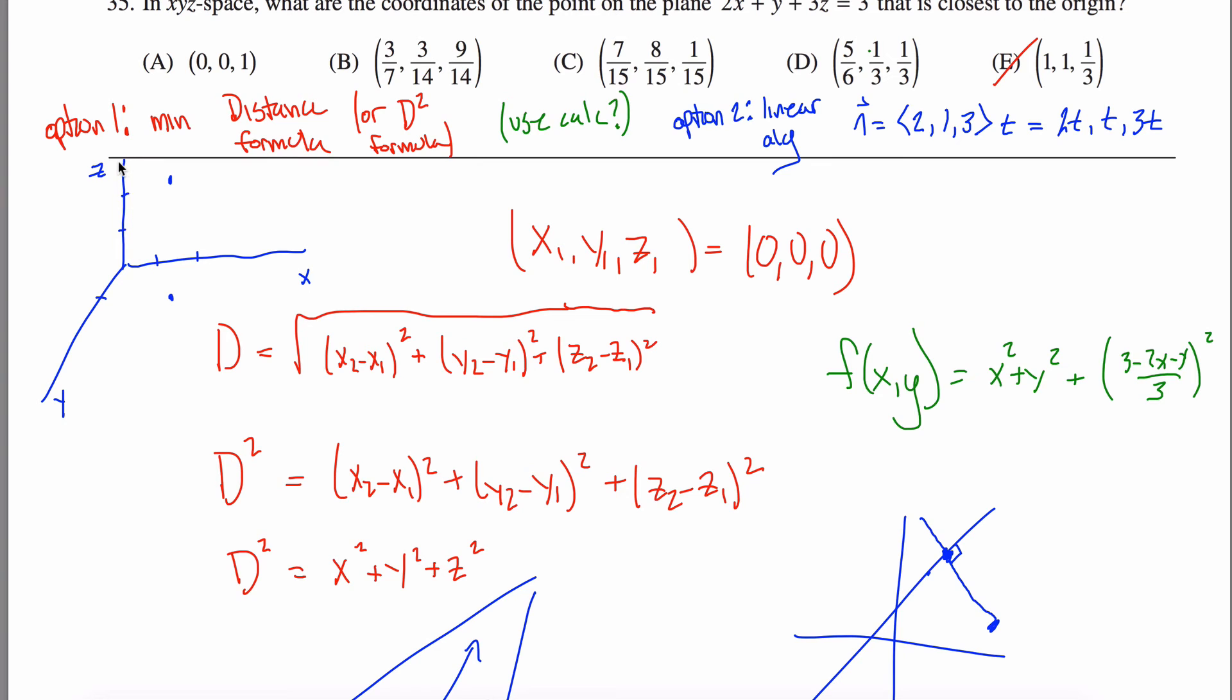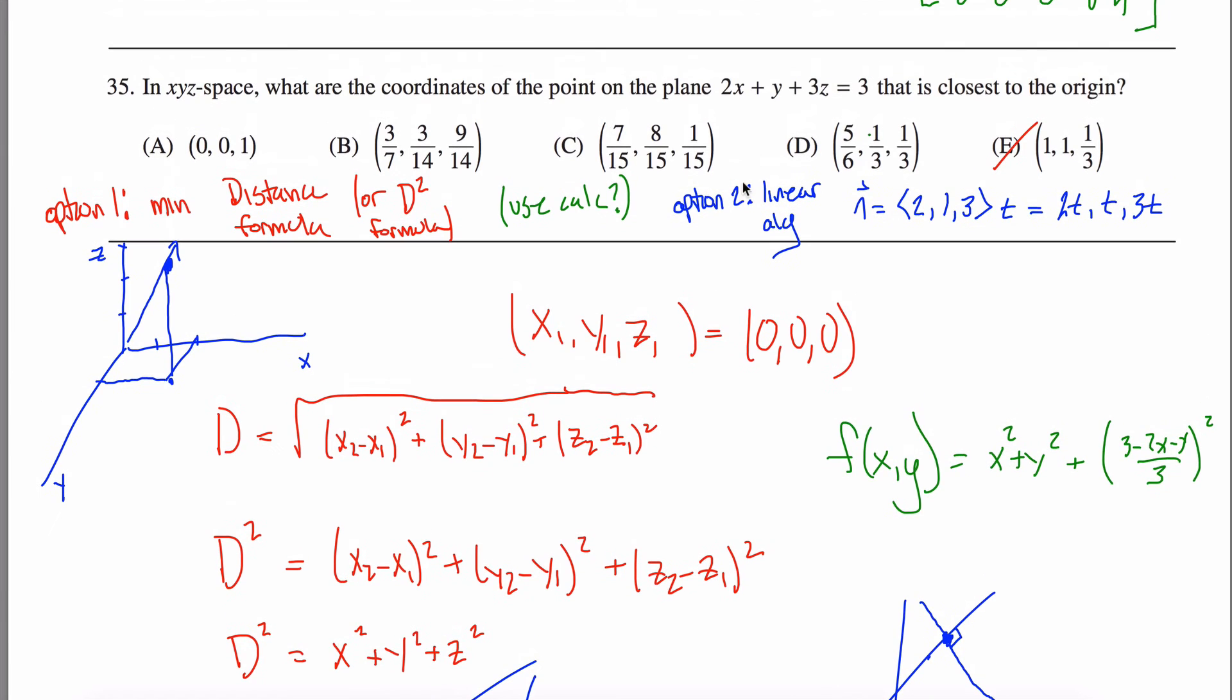1, 2, 3. That guy right there, it defines this vector kind of coming out. And when that vector intersects this plane, I will be at the closest possible point.